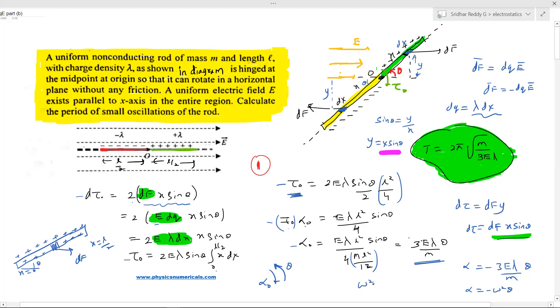So finally, what is α? α equals (3e λ/m) θ. Comparing with the equation of SHM, we'll get ω², and that T equals 2π/ω.